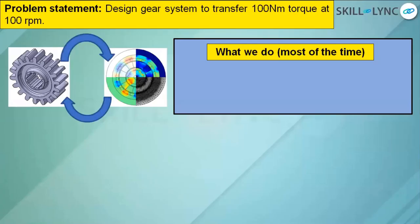From a problem statement perspective, when you are just introduced into the industry, take for example: design a gear system to transfer 100 Newton meter torque at 100 RPM. What do students exactly do? They start by making the CAD immediately.